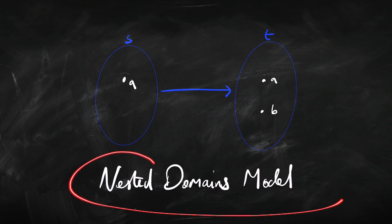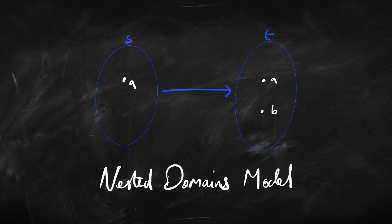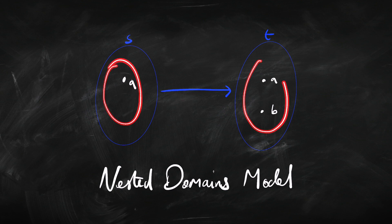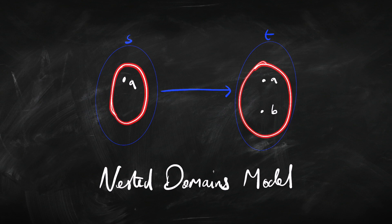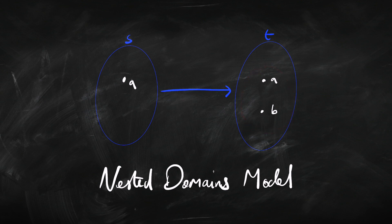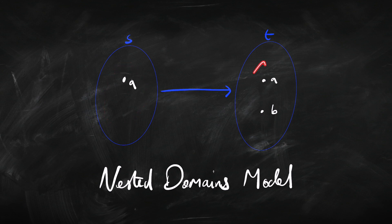Let's look at those. First up, we have nested domains. The idea in a nested domain model is this: if there's an arrow from S to T — so T is accessible from S — then we want S's domain to sit inside, to be nested within T's domain. In other words, all of the things in S's domain should also be things in T's domain. There might be more things in T than in S, or they might be the same — that's fine too. But there can't be things in S that don't exist in T. Whenever that's true across worlds with an arrow between them, we say that's a nested domains model.